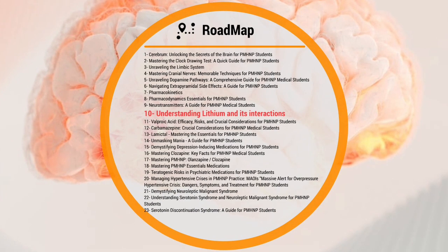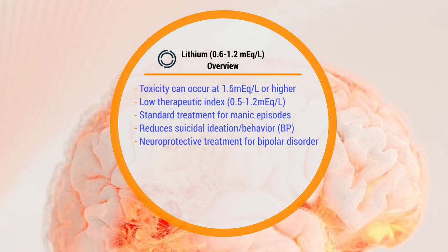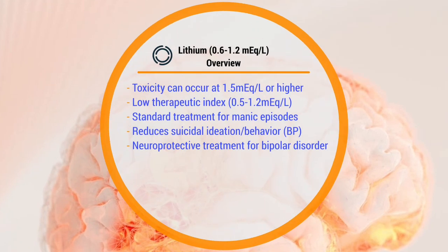This is our road map to success: understanding lithium and its implications and interactions. It's important to know what your levels of toxicity start at — toxicity starts at 1.5 or higher. Lithium has a low therapeutic index. As you can see, the normal values are 0.5 to 1.2, which is a very narrow window. So it's very important that you understand the normal levels of 0.5 to 1.2.